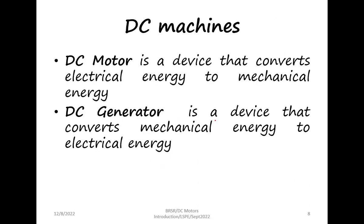For DC machines: a DC motor converts electrical energy to mechanical energy, and a DC generator converts mechanical energy to electrical energy. Depending on what input we give, the same machine can either work as a motor or a generator. If electrical energy is given as an input, we get a mechanical output — that becomes a motor. If we give a mechanical input to the same machine and generate electricity, then it becomes a generator.